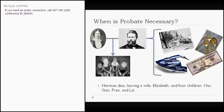So when do you actually have to probate something? We're going to look at a hypothetical family — the Melvilles. You've got Herman and his wife Elizabeth, and their four children: Mac, Stan, Fran, and Liz. Unfortunately, while Herman's out jet skiing around looking for whales, he drowns. When he drowns, he leaves several pieces of property including a house, some silverware, his jet ski, and some bank accounts with cash. The problem his family faces is how do they get this property to go where it's supposed to go.